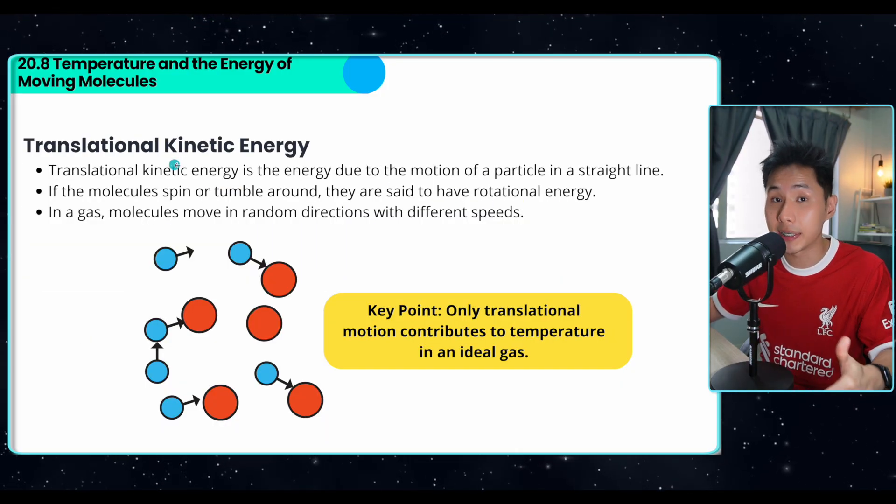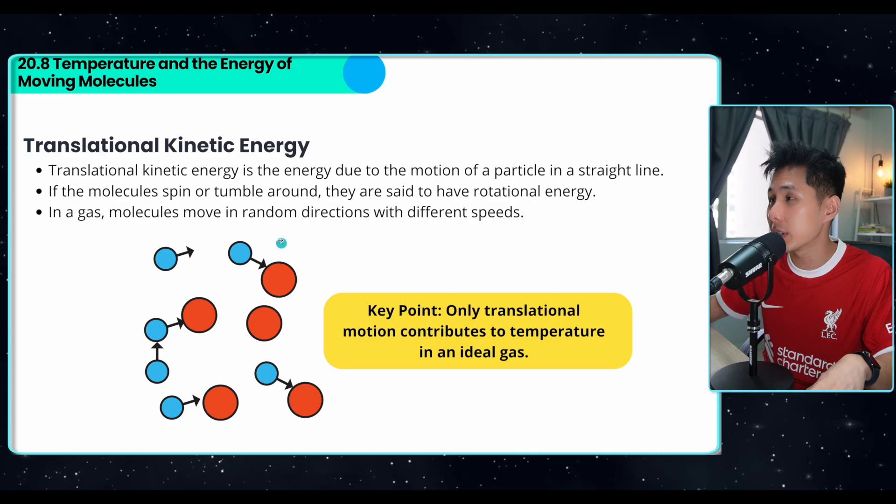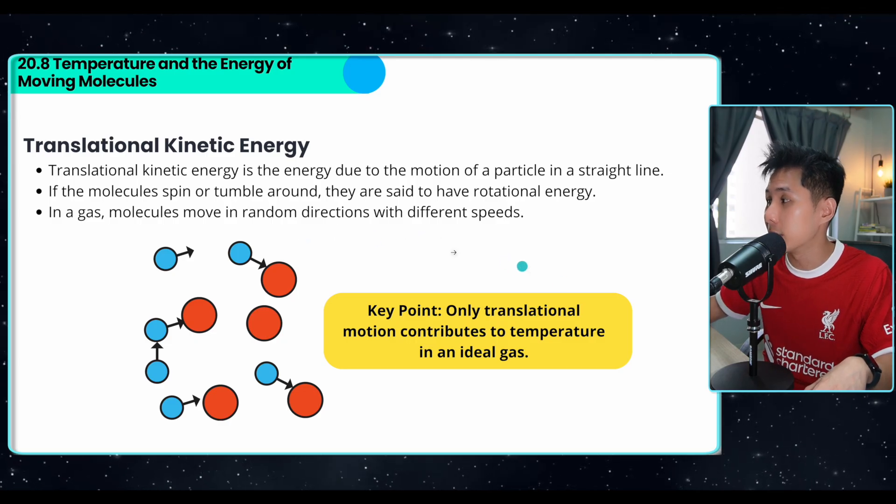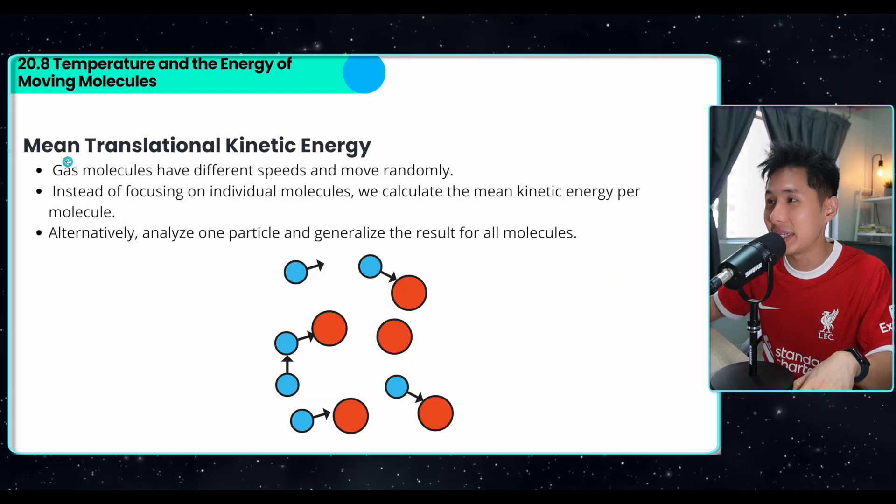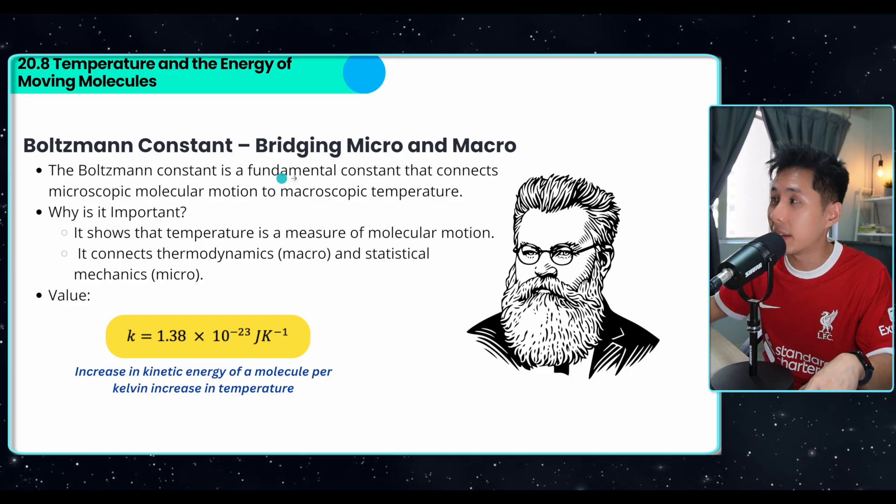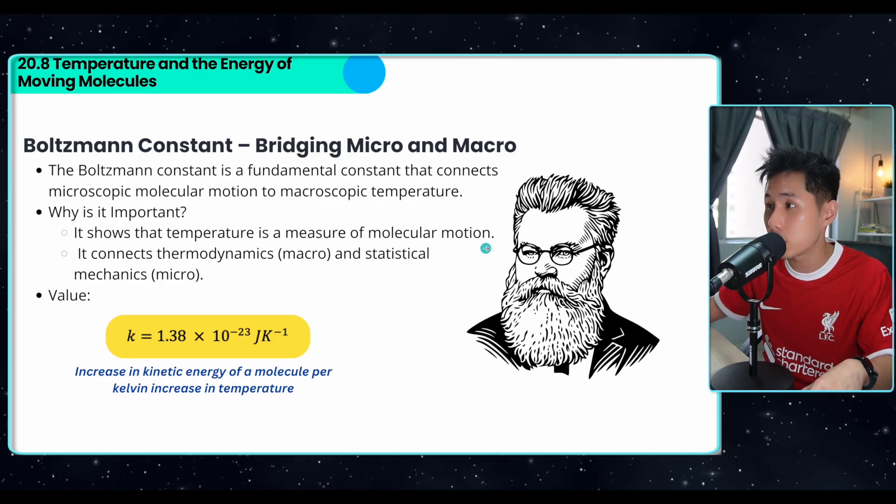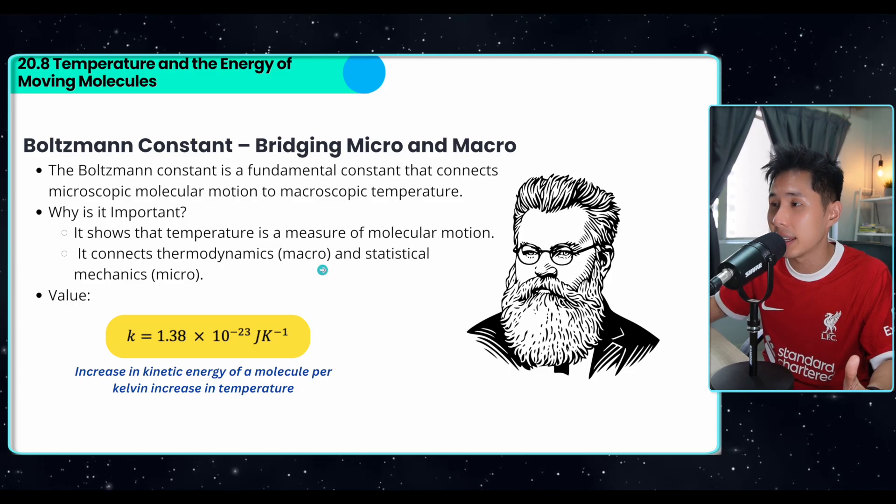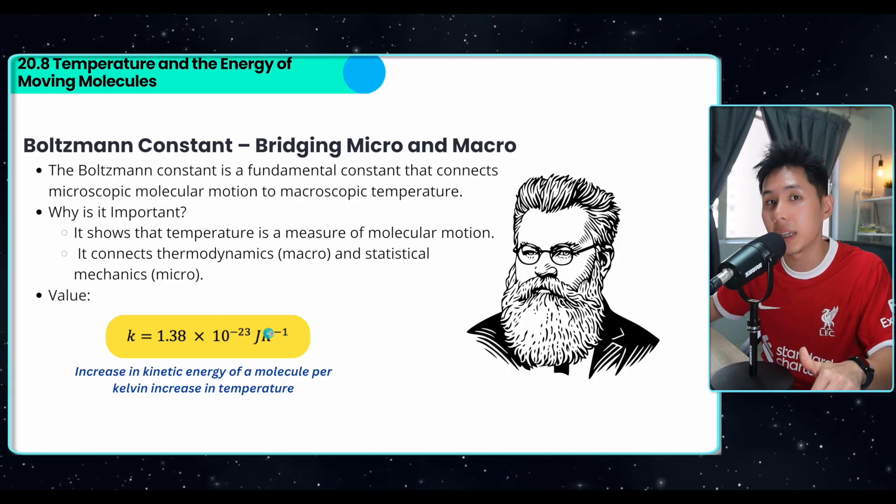When studying gas particles, you'll also need to know what translational kinetic energy is. It's the energy due to the motion of a particle in a straight line. If the molecule just spin and tumble around, they are said to have rotational energy instead. In a gas molecule move in random direction with different speed. So the key point here is that only translational motion contributes to temperature in an ideal gas. And if you add a word called mean, that's the average kinetic energy possessed by one particle. So the Boltzmann constant is a fundamental constant that connects the microscopic molecular motion to the macroscopic temperature. So it shows that temperature is a measure of molecular motion, because previously no one knows that average kinetic energy is related to the temperature. And he shows that. And the value of k here is this amount. That's the increase in kinetic energy of a molecule per Kelvin increase in temperature.